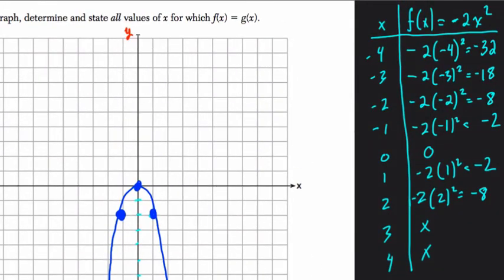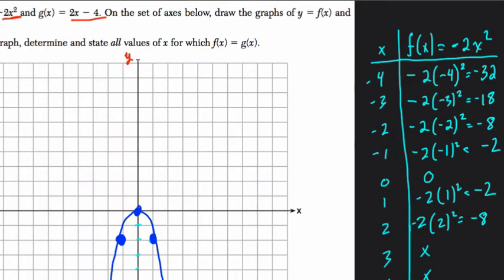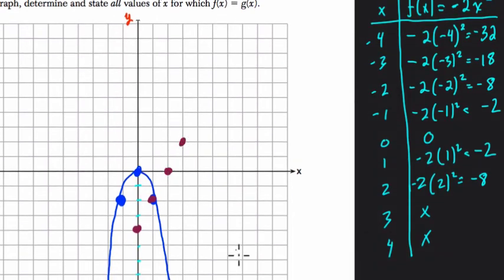Now g of x is the graph of 2x minus 4. So this is already in slope intercept form. We know the intercept is negative 4. If you remember, in y equals mx plus b form, this is our b value, our y-intercept, and 2 is our slope here. So 2 is the slope. We go up 2 over 1. And you can see the intersection right there, up 2 over 1, up 2 over 1, and so forth.